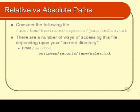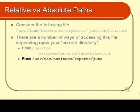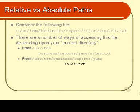Let's have a look at more examples. If you happen to be in that same directory /user/tom/business/reports/dune, then all you need to type to get to sales.txt is just sales.txt. When I say get to sales.txt, I mean you might want to cat it, more it, head it, tail it, or ls it. So you might type cat sales.txt, whereas in the previous example you'd type cat business/report/dune/sales.txt.